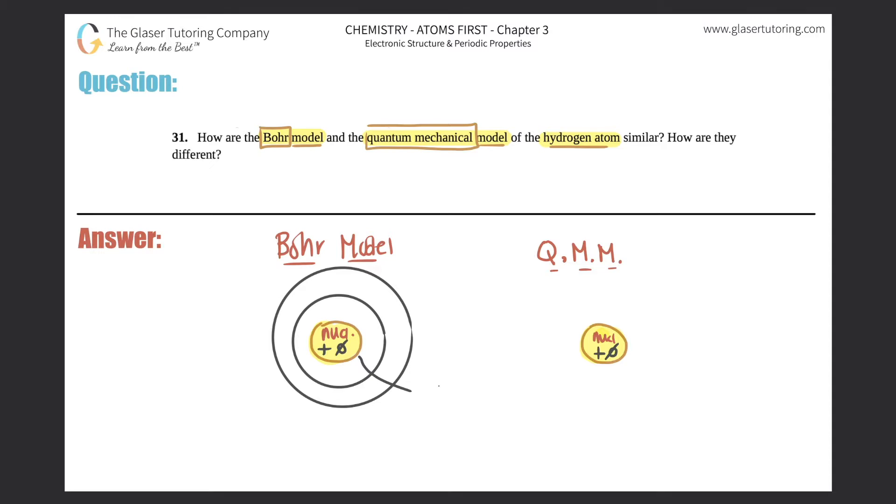Also, they both realize that the nucleus is where majority of the mass comes from. So for both of these, majority of the mass. So in both models, the majority of the mass comes from the nucleus. The nucleus is very mass heavy because that's where all the protons are located. And they also agreed that the electrons are outside of the nucleus. So those are your similarities thus far.